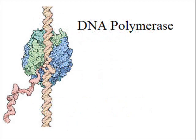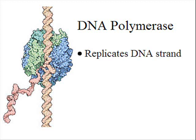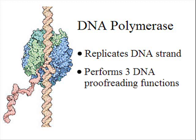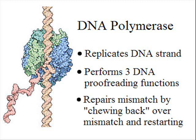DNA polymerase is one of the critically important molecular machines of the cell. It replicates genetic information from the DNA strand. It performs at least three DNA information proofreading functions. It repairs the effects of random genetic mutation by chewing back over mismatches and restoring the reassembly of the molecule.